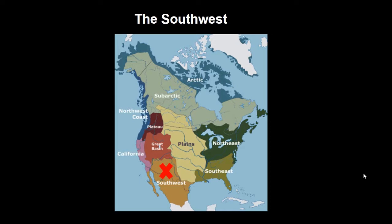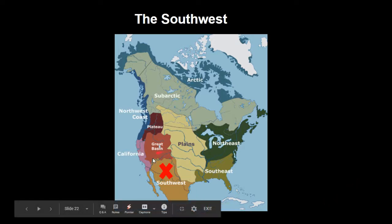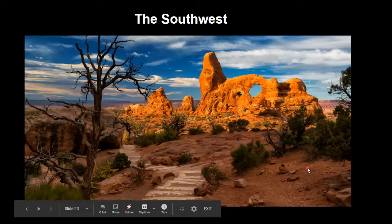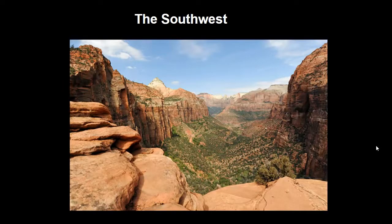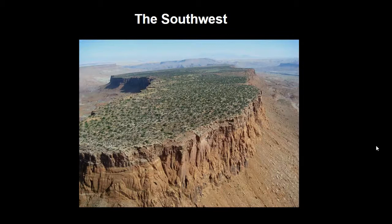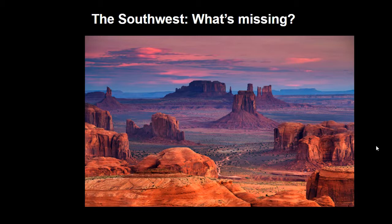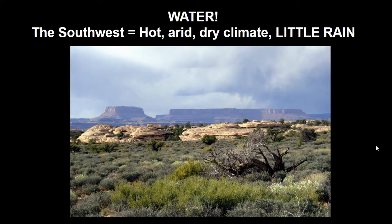Now let's look at the other Native American group from your reading: the Native Americans of the Southwest. The Southwest culture region was located here, and the environment included deserts, mountains, canyons, and mesas, which are flat-topped hills with steep sides. There's one thing all of these environments are missing: water. The Southwest is a very hot, arid, dry climate — that word arid simply means dry. It does not get a lot of rain in the Southwest.